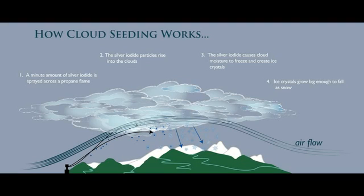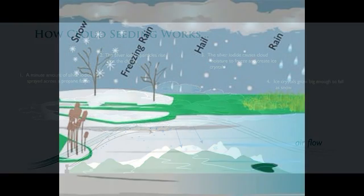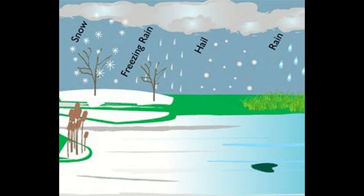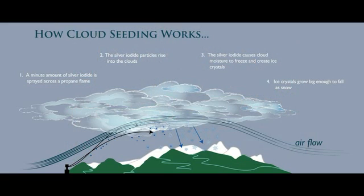Cloud seeding is the process of spreading silver iodide aerosols into the tops of clouds. Scientists do this process to maximize rain and snowfall capabilities. Cloud seeding originally originated in the 1940s from an experiment at GE Labs in New York in 1946.